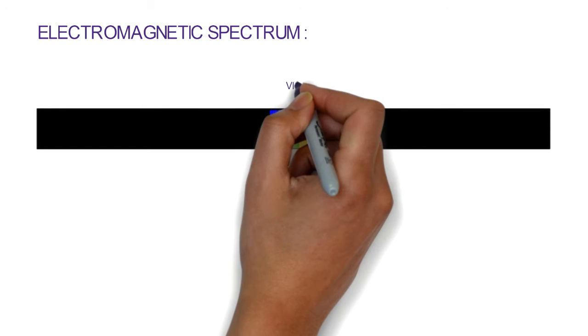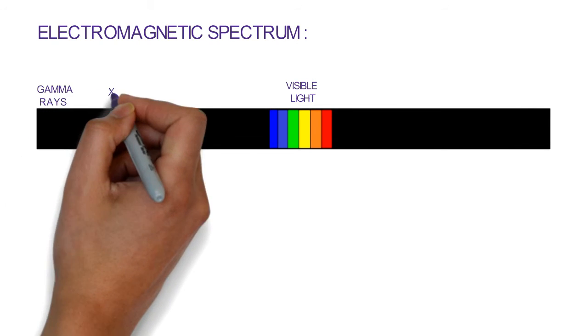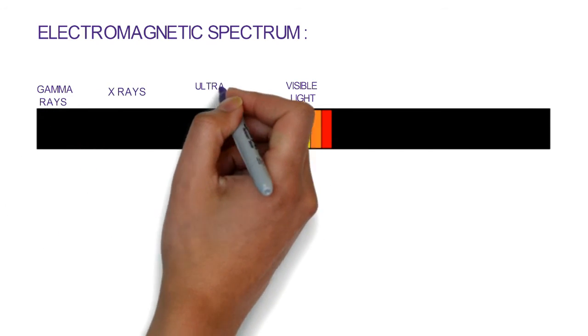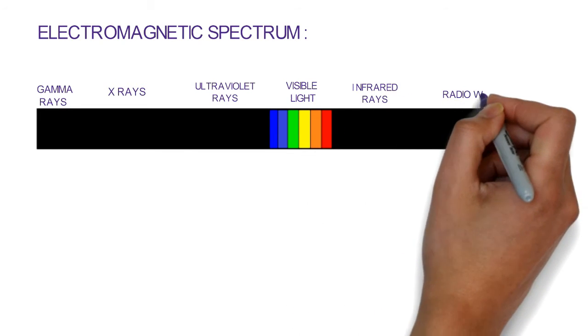Electromagnetic waves have a huge range of frequencies which can be studied with the help of the electromagnetic spectrum. The human eye is sensitive to visible light. Gamma rays, X-rays, ultraviolet rays, infrared rays, and radio waves are invisible to human eyes.